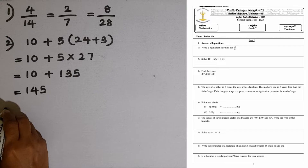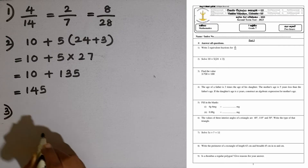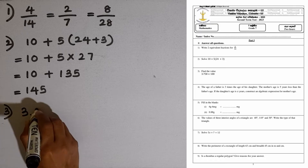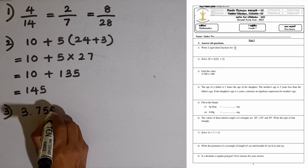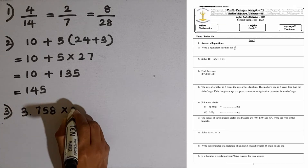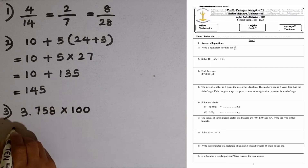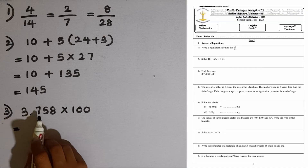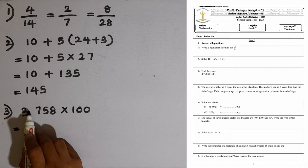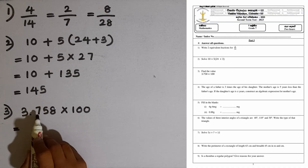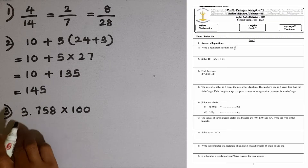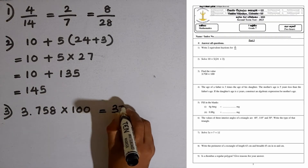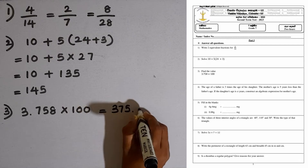Question number 3. Find the value of 3.758 multiplied by 100. When multiplying by 100, the decimal point goes two places to the right side. So the answer is 375.8.